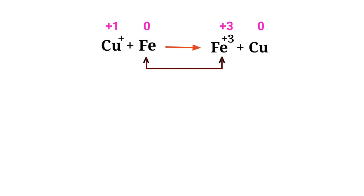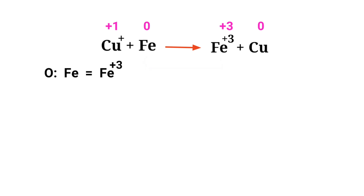In this equation, Iron has a charge of 0 and is changing into plus 3, so Iron is being oxidized. Copper has a charge of plus 1 and is changing into 0, so Copper is being reduced.